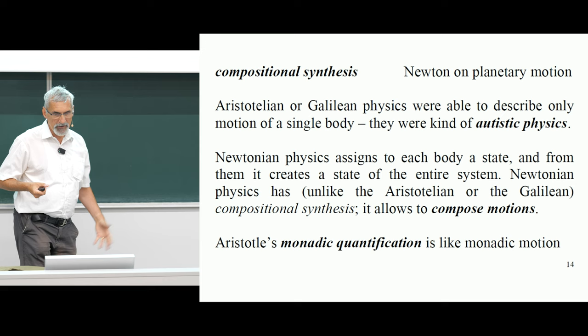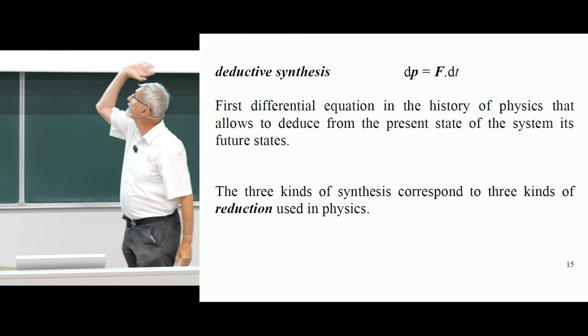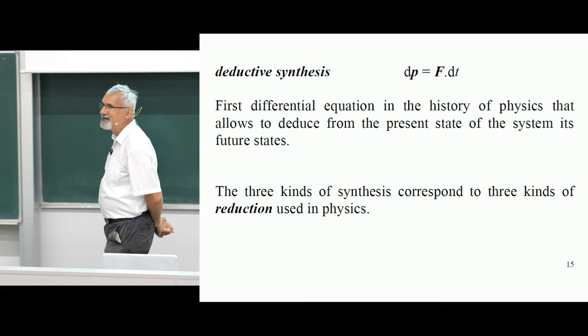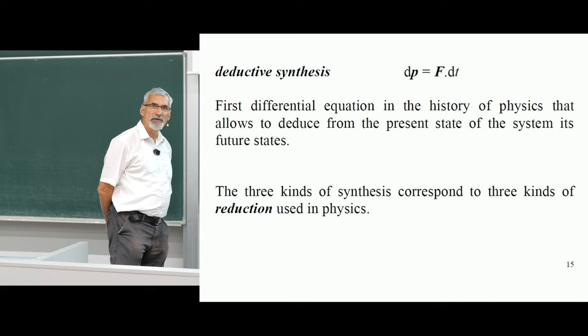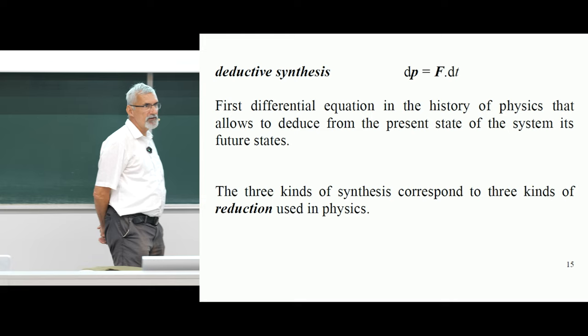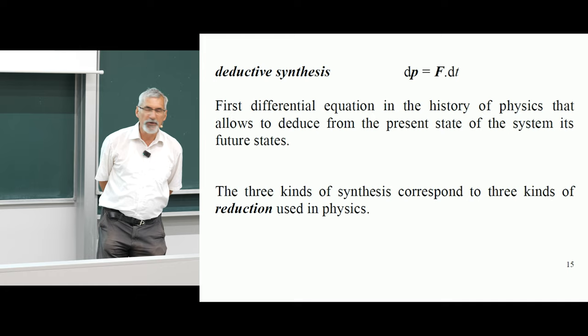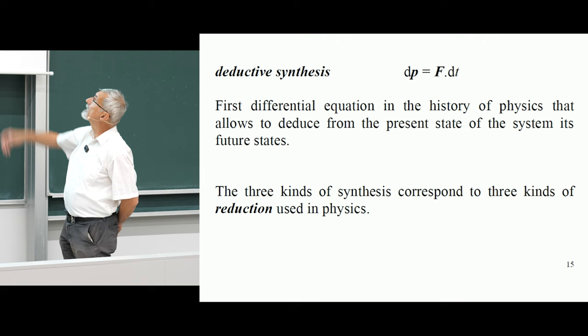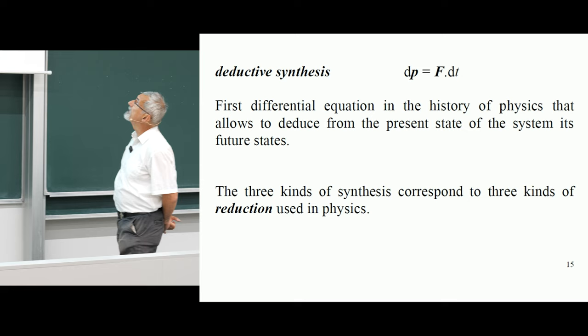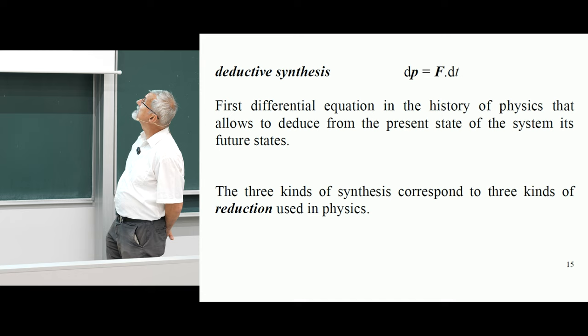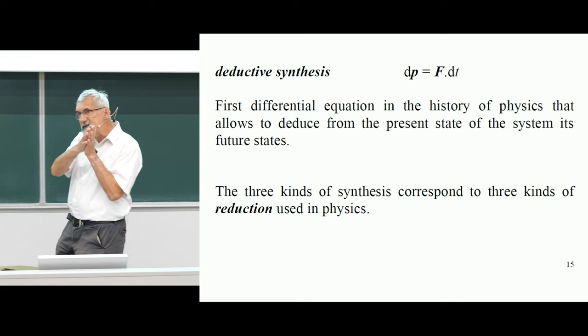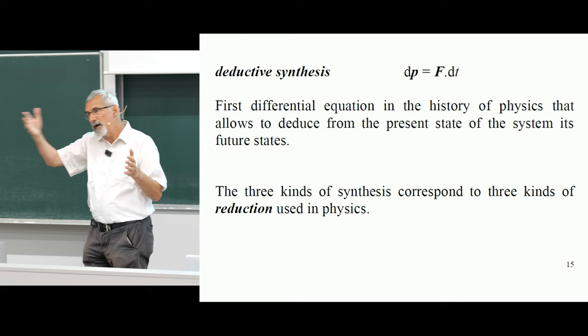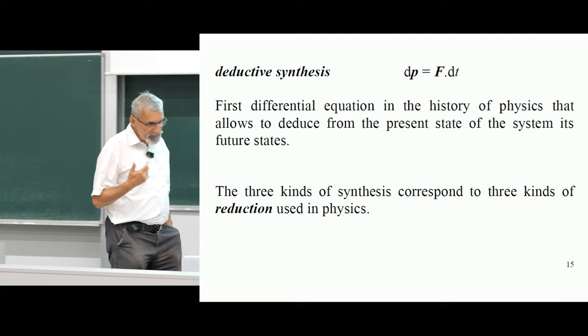The third kind is deductive synthesis. This is Newton's law written by Euler. Euler was complaining that if you slightly changed the conditions in any problem solved by Newton, you couldn't solve it because the geometry didn't work. The Newtonian system was formulated in geometrical language. Euler rewrote it into a differential equation — this is the first differential equation in the history of physics and mathematics. It allows us to deduce from the present state of the system its future states. These three kinds of synthesis correspond to three kinds of reductions.